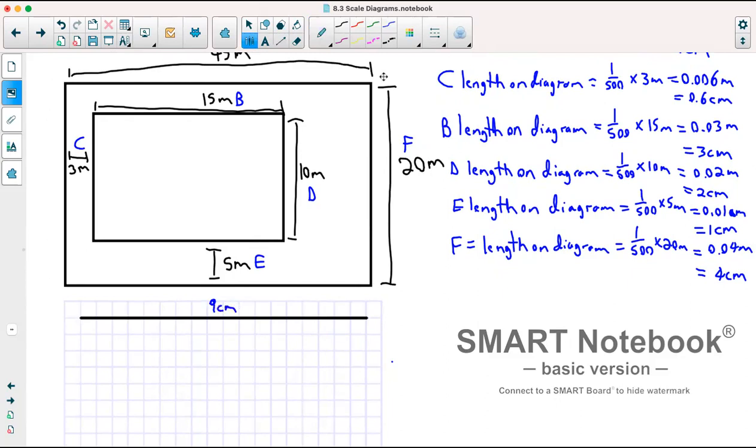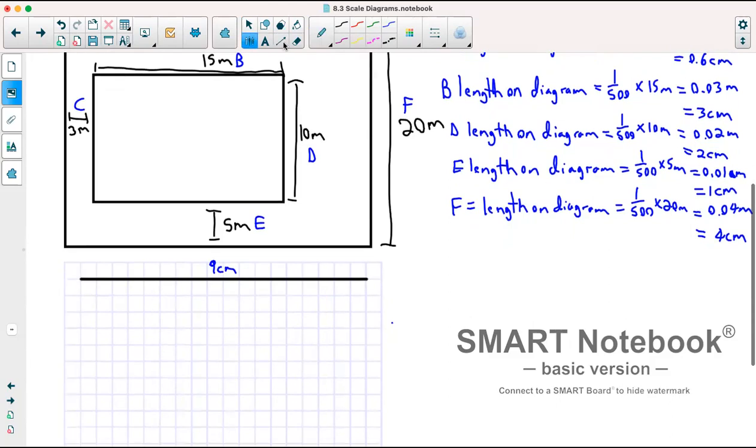I might as well do this vertical part and that. So that was originally 20 meters. That became four centimeters. So once again, every box is half a centimeter on here.